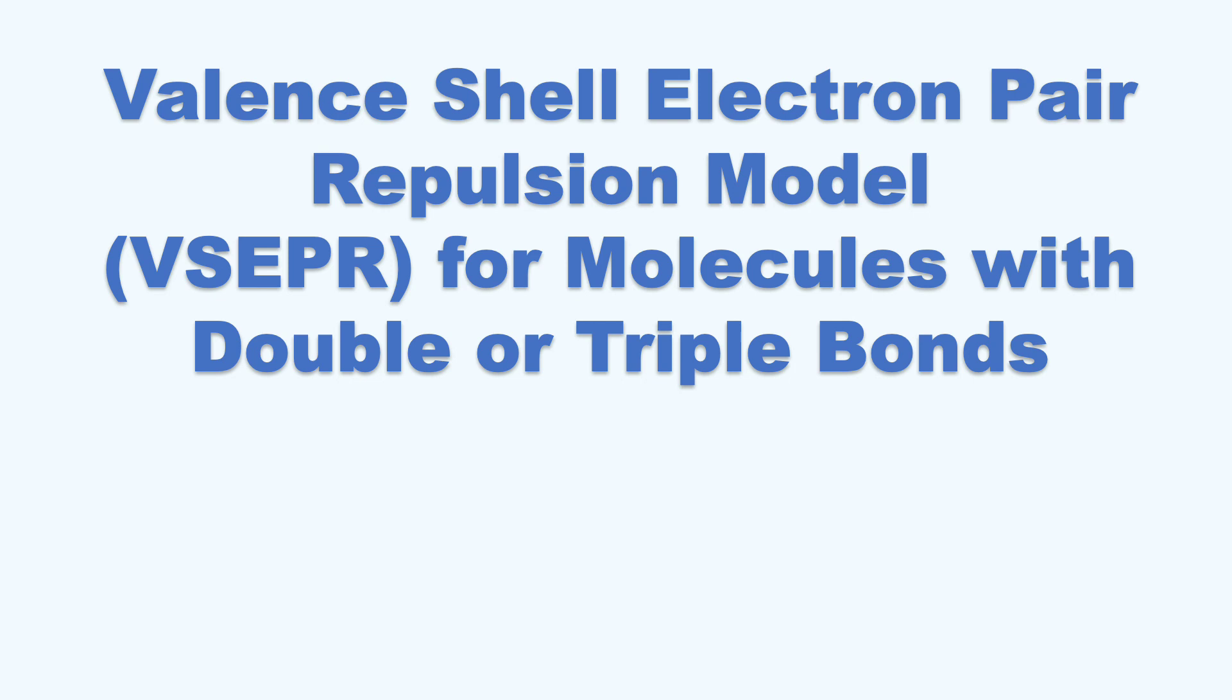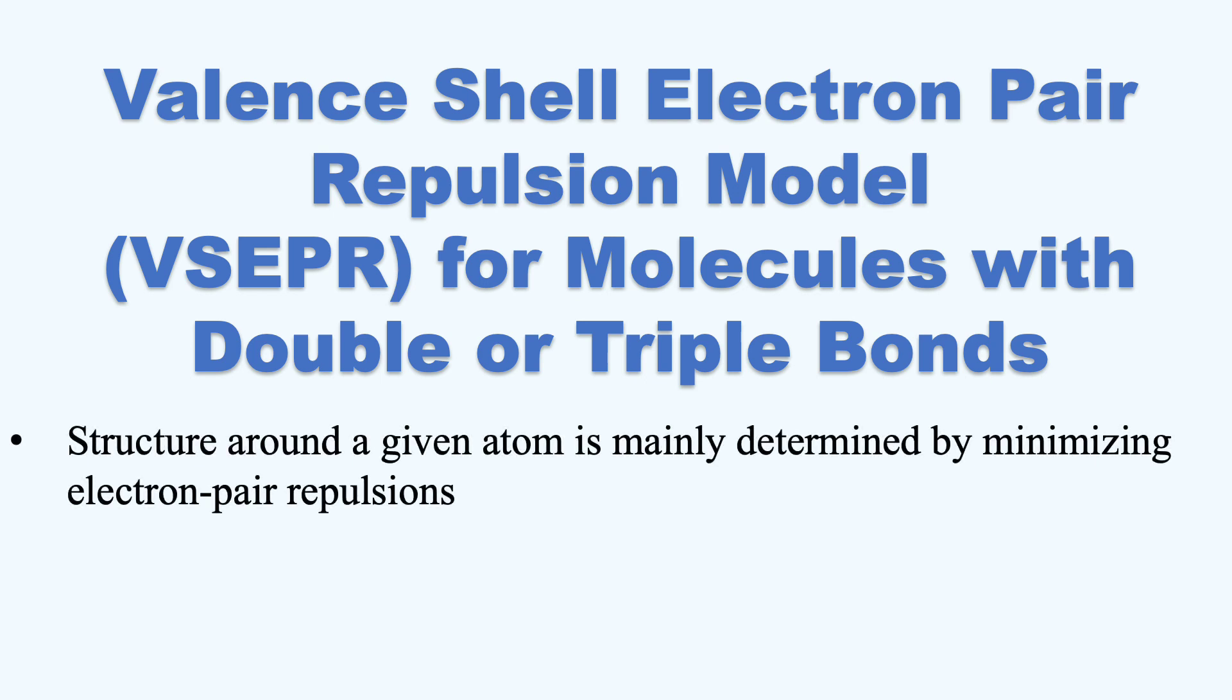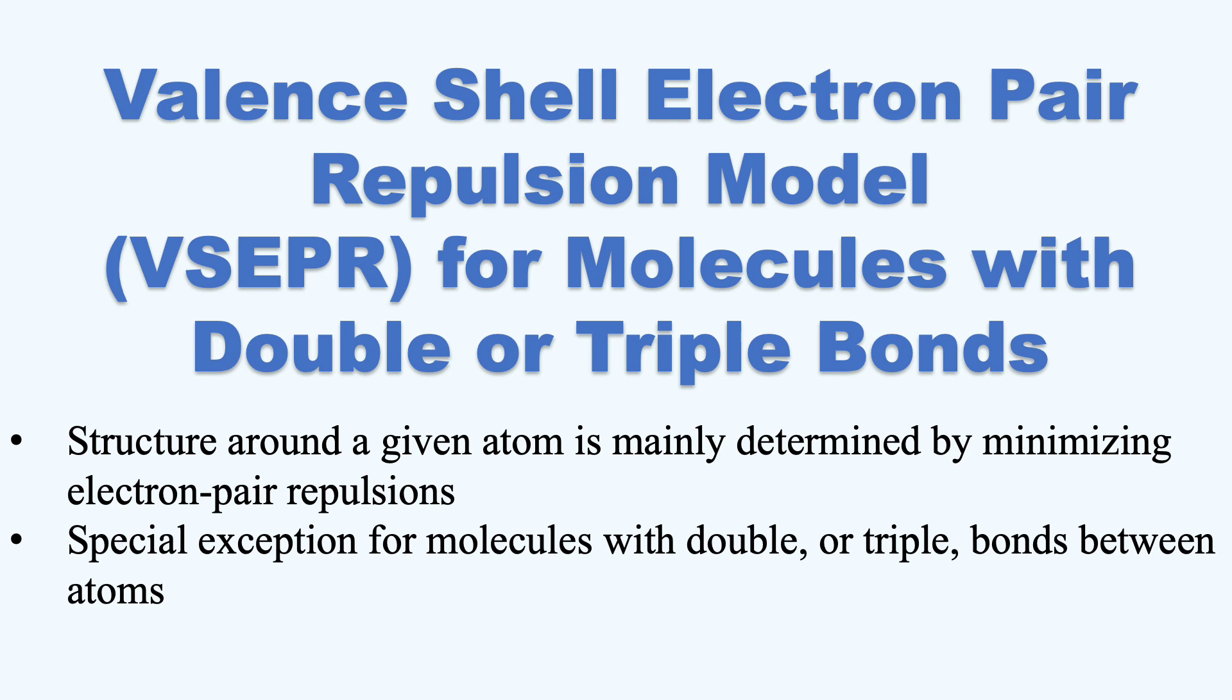The valence shell electron pair repulsion model, also referred to as VSEPR, was introduced in an earlier video. Recall that this model states that the structure around a given atom is mainly determined by minimizing electron pair repulsions. There is a special exception for molecules with double or triple bonds between atoms.